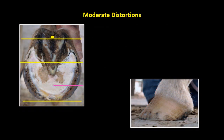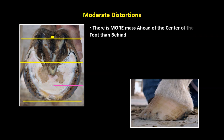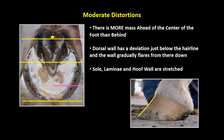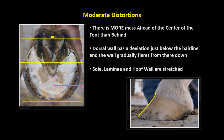Moderate distortions: there is more mass ahead of the center of the foot than behind. The dorsal wall has a deviation just below the hairline and the wall gradually flares from there down. The sole, lamina, and hoof wall are stretched.